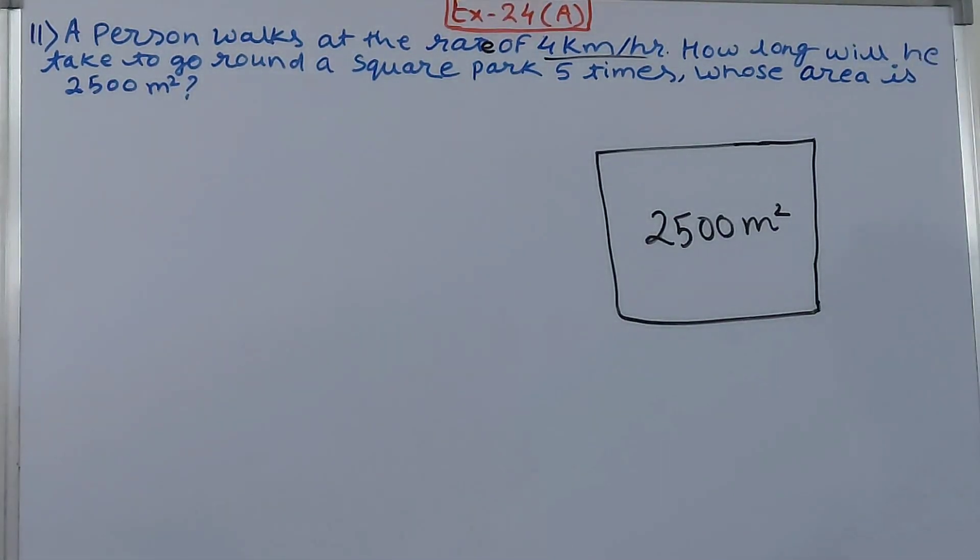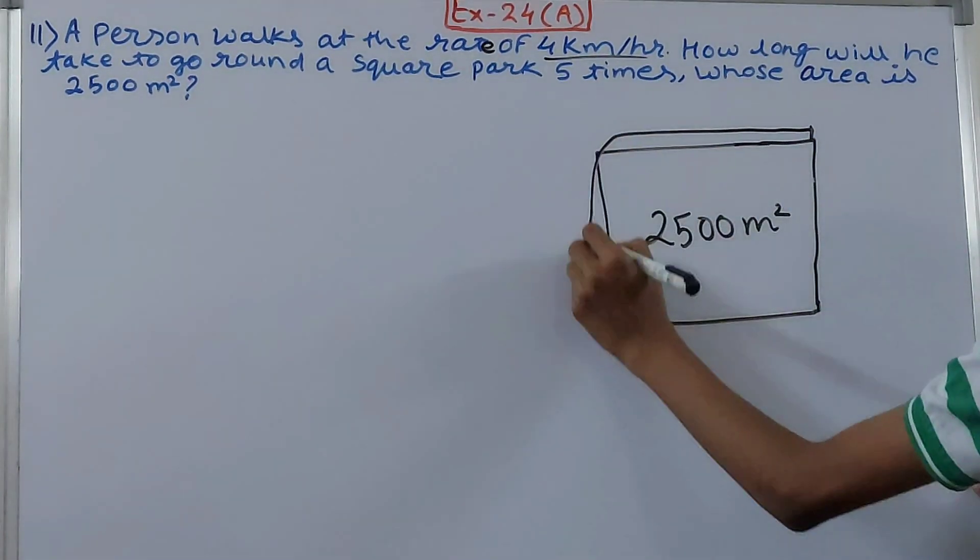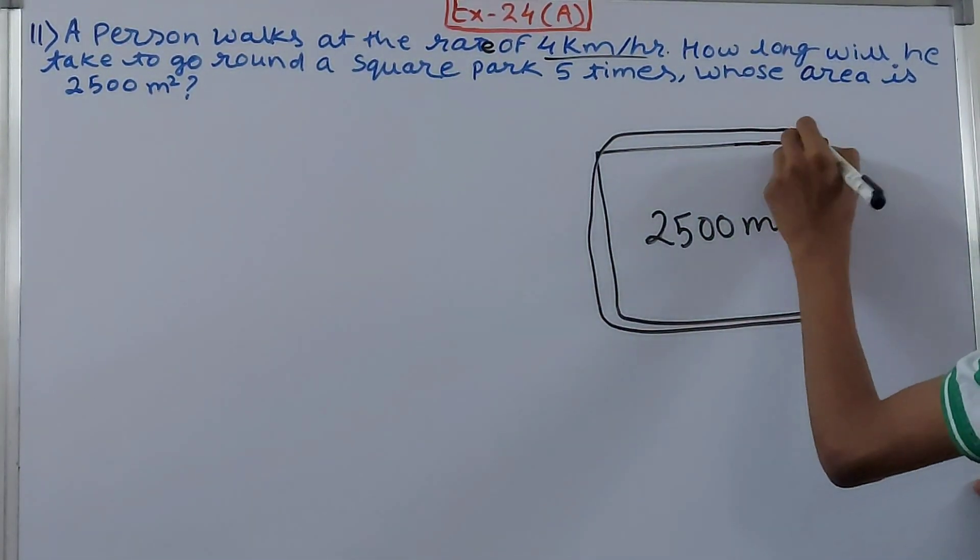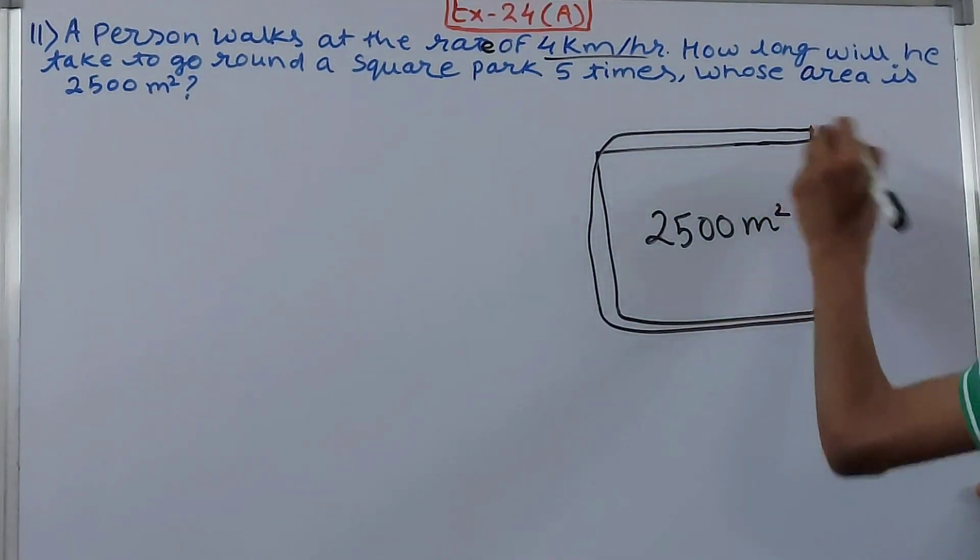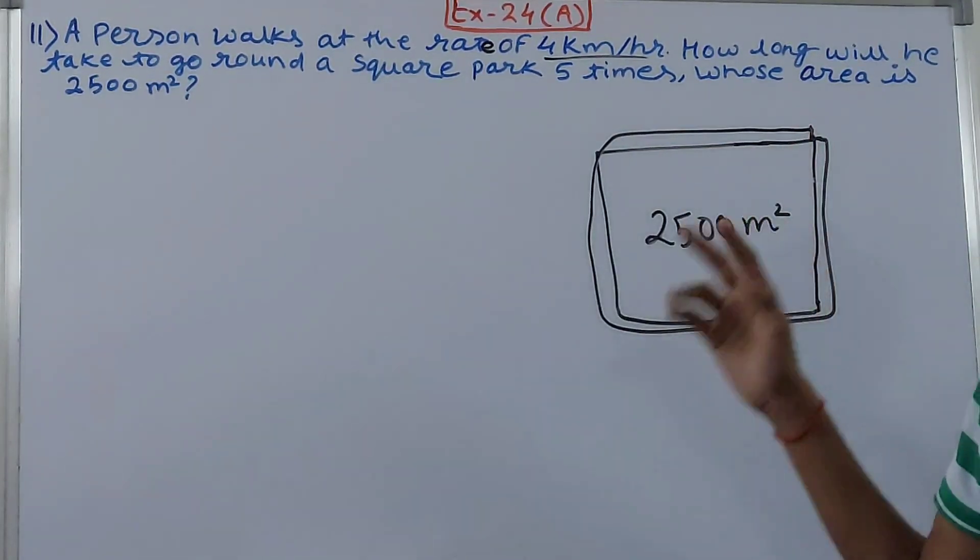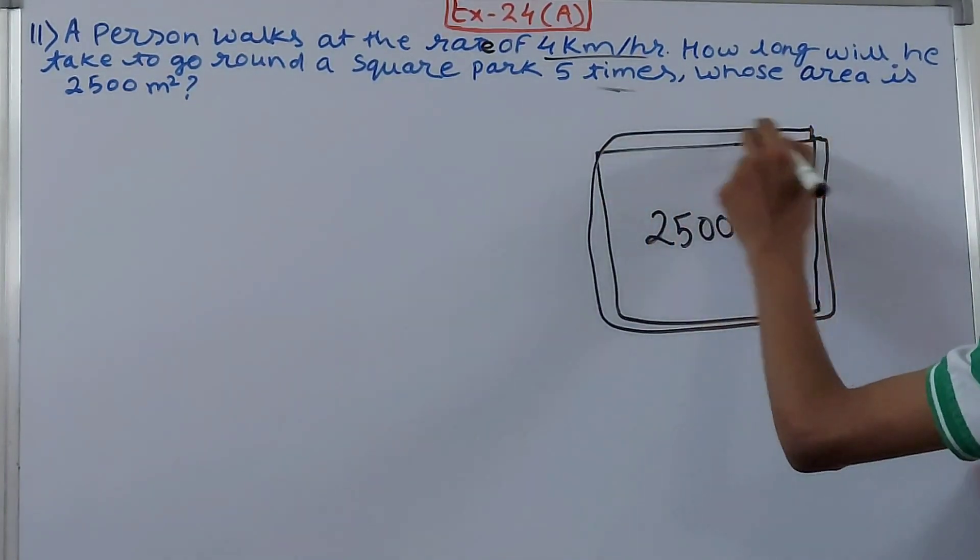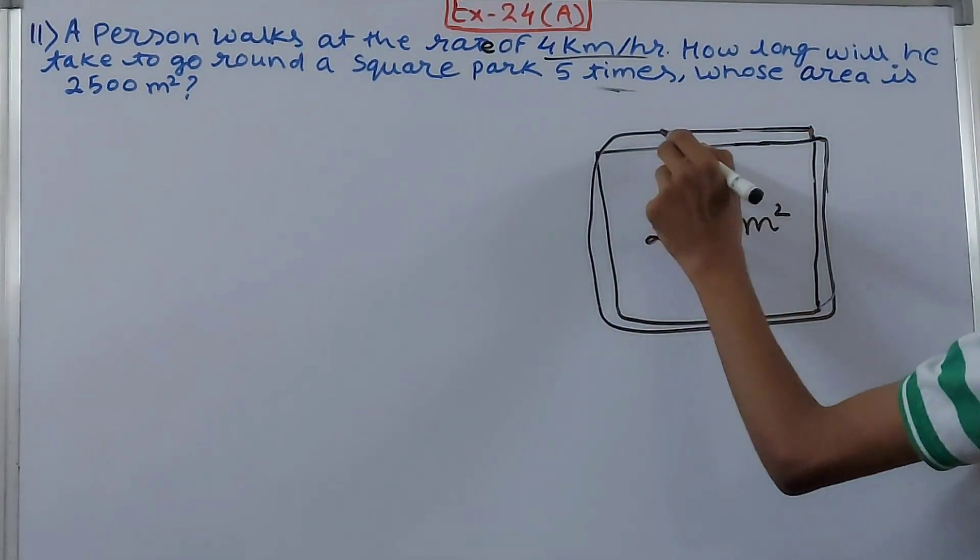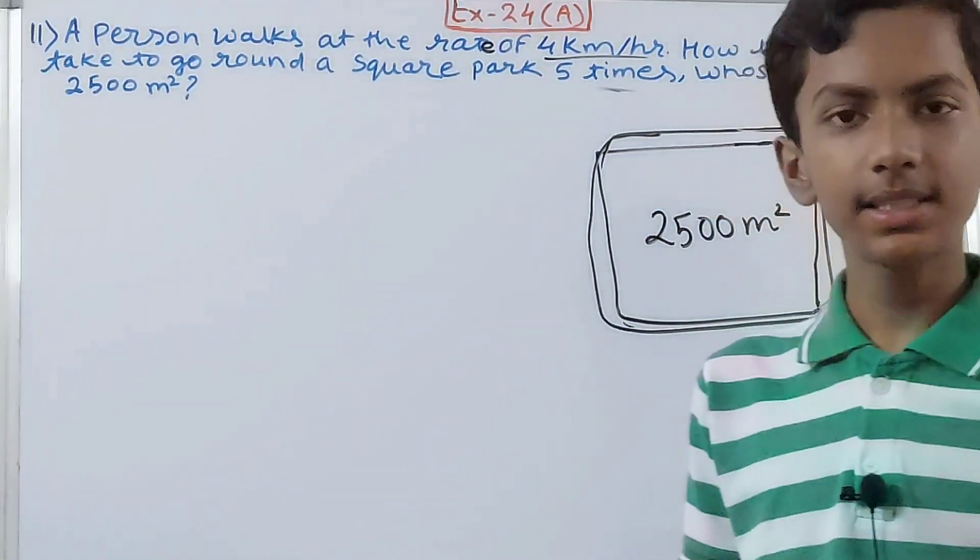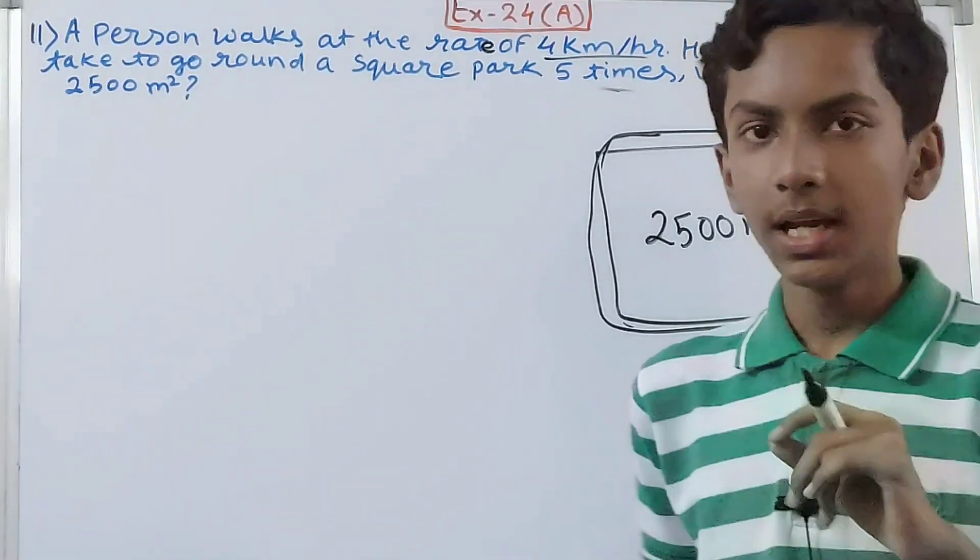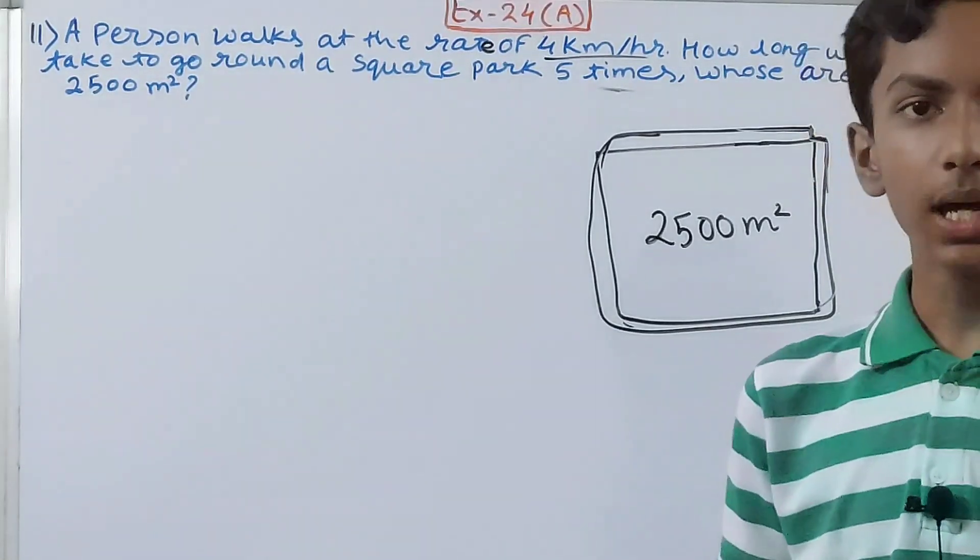The problem asks for the time that person will take to go around 5 times the park. So suppose the person starts from here, he has to go 5 times around - from the starting point, all the way around back to the original point. Going from the start and coming back to the same point around the entire park is considered one round, but they are asking for 5 rounds. If he does this 5 times, then he has traveled 5 rounds.